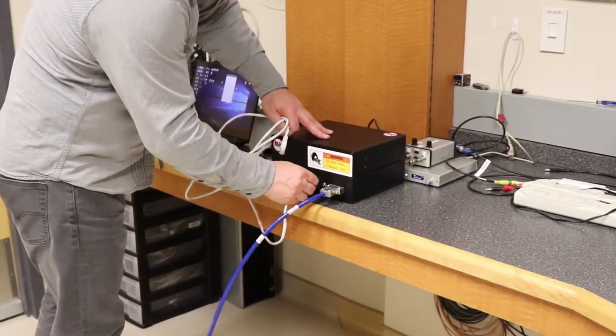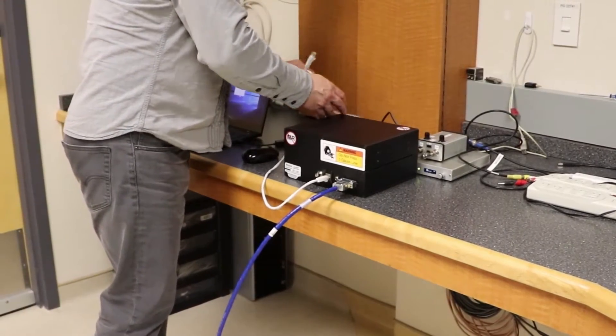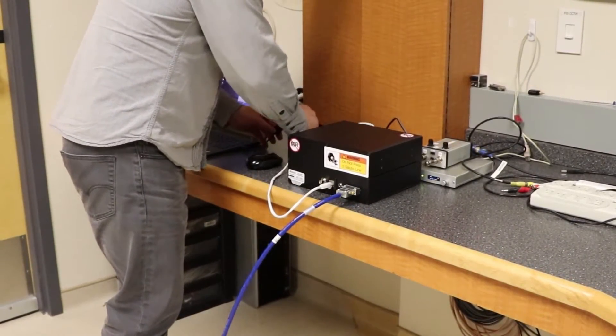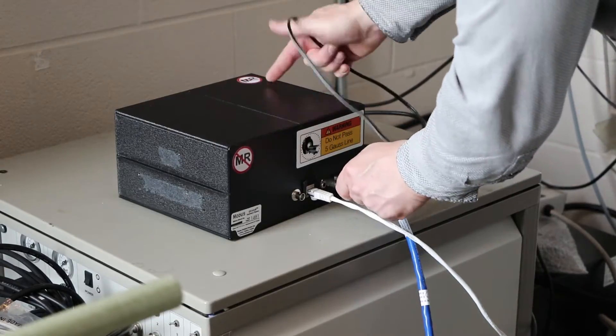For the alternate console room setup through a waveguide, attach the included Ethernet cable directly to the control box and your computer. Connect the power supply to a wall outlet and the other end into the control box.